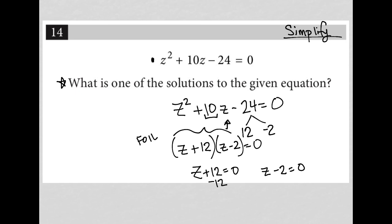So this part's fairly simple. Subtract 12 from both sides here, I get z equals negative 12 as one solution, and add two to both sides here and I get z equals 2 for another solution.